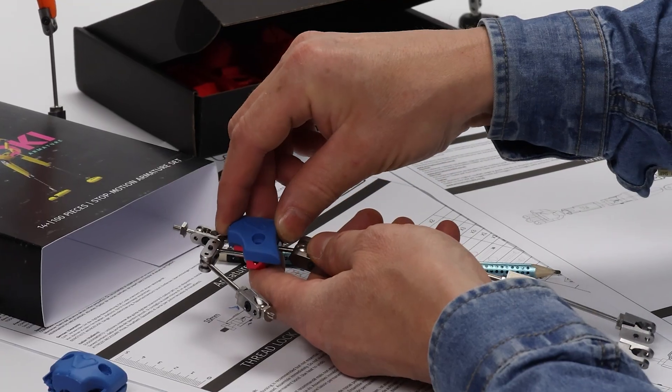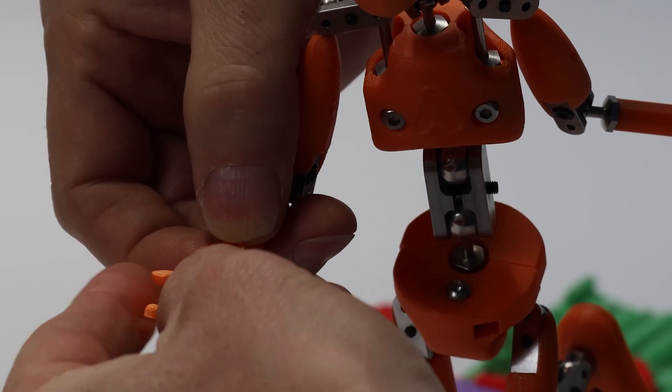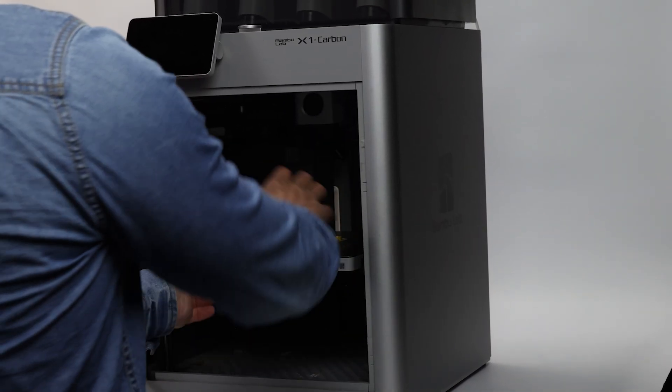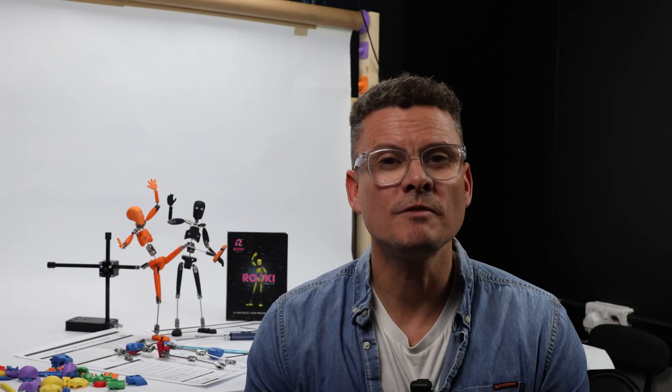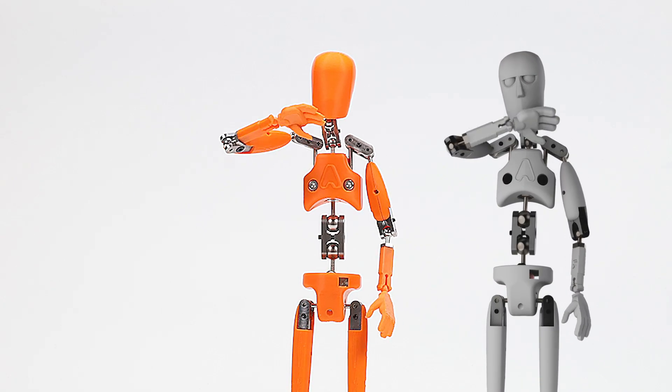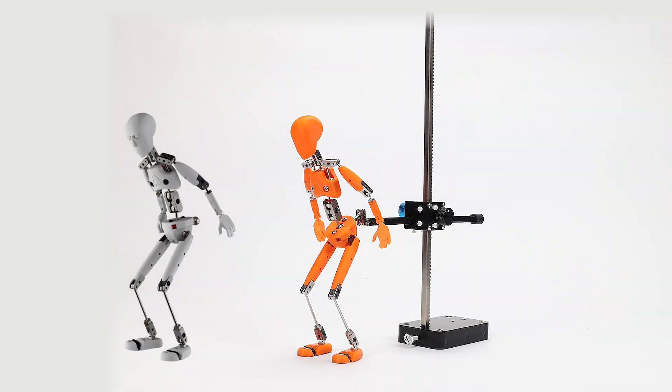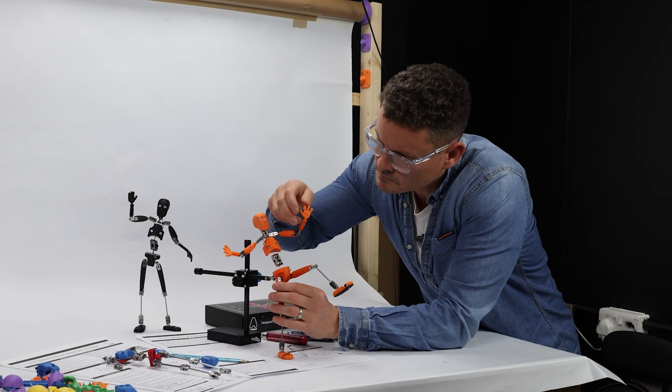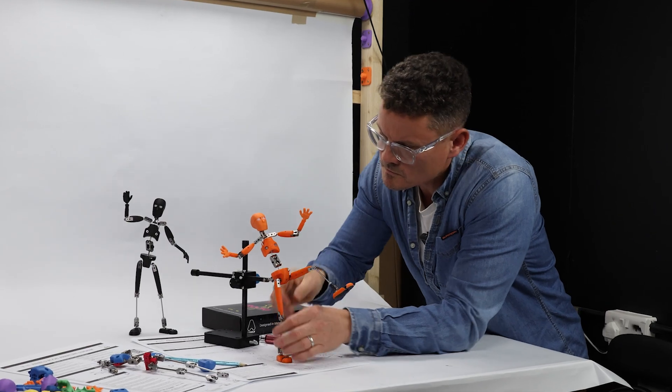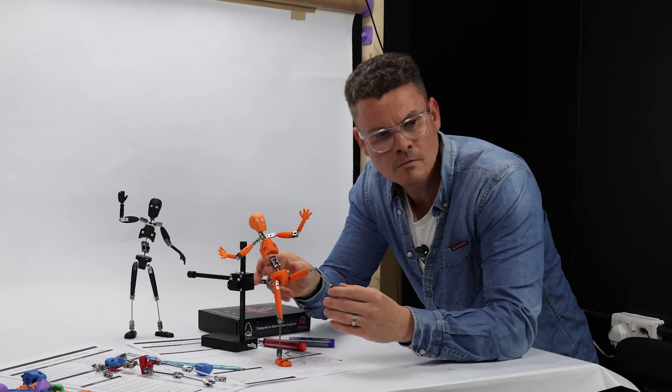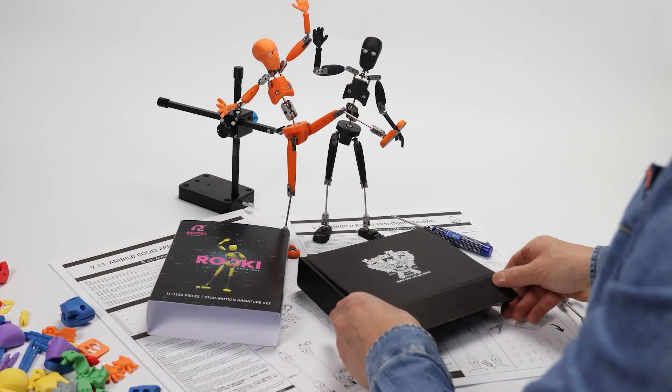Once you've learned the basics, it's easy to adapt to create your own sequences and bring your own stories to life. Rookie isn't just a regular armature—it's part of a growing ecosystem for stop motion animation that we're developing, designed to make the art form more open, creative, and accessible for everyone.